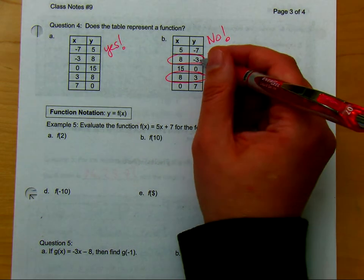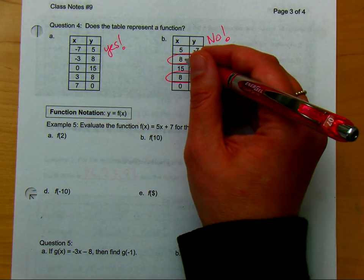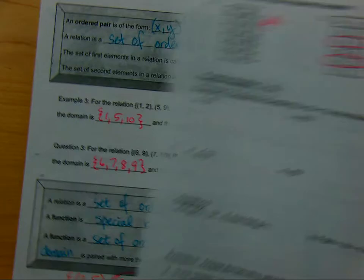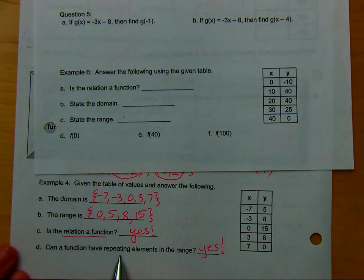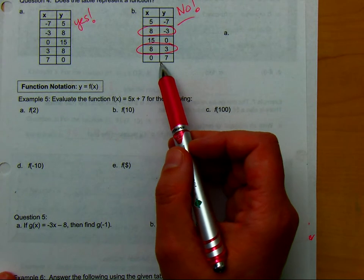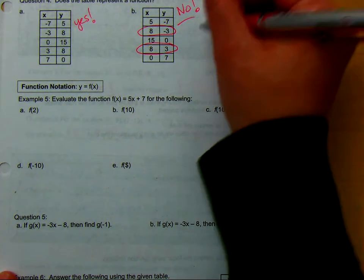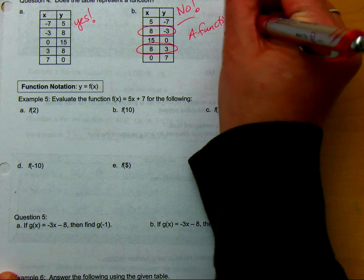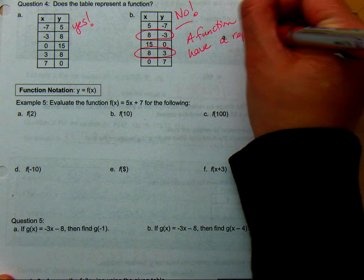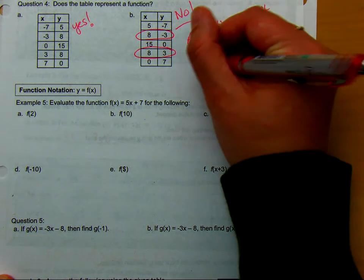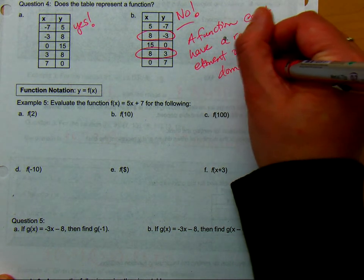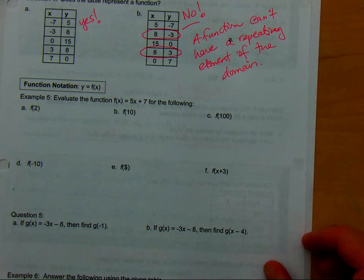So here we say it's not a function because an element of the domain is paired with two separate elements of the range. So just like we answered this question, can a function have a repeating element of the range? You said yes. Can a function have a repeating element of the domain? No. A function can't have a repeating element of the domain. And that would make it not a function. Any questions on that?